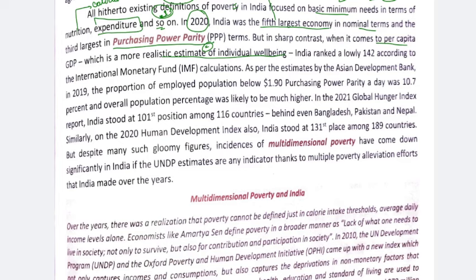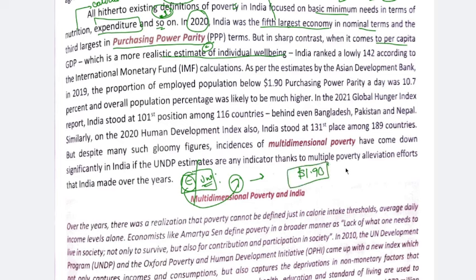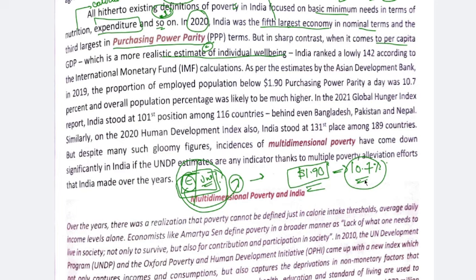According to the Asian Development Bank, if we consider only the employed population, those who cannot spend $1.90 per day for basic minimum requirements account for 10.7% of the employed population. This $1.90 figure is the poverty line used by the Asian Development Bank.